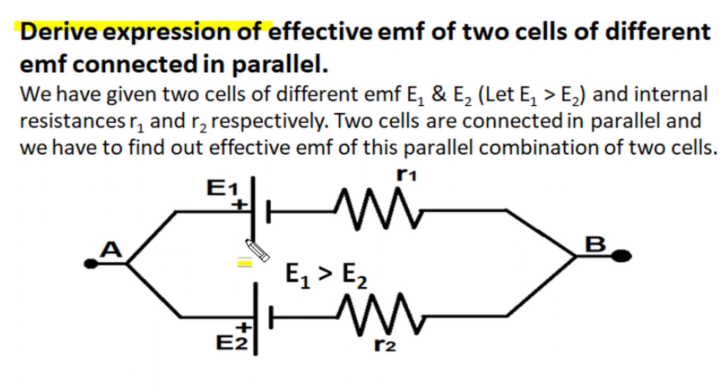Here we are given two cells of different EMF, E1 and E2, where E1 is greater than E2. They have internal resistances R1 and R2 respectively. Two cells of different nature are connected in parallel, and we know in parallel they should have the same terminal voltage. For this particular combination, we have to find out the effective EMF of this parallel connected cell combination.